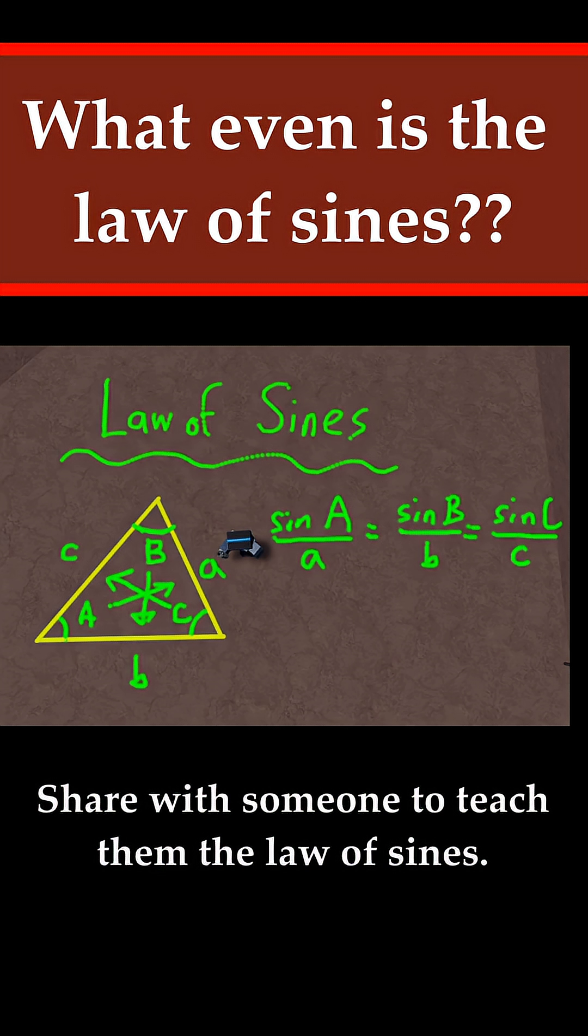I also want to point out something. Notice how these are all fractions that equal to each other. That means you can also flip it and do it the other way around. So what I mean by this is you can also write this as A divided by sine A is equal to side B divided by the sine of angle B, which is also equal to C divided by the sine of angle C. So you can use either one of these when you're doing the law of sines. Either one is okay.